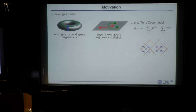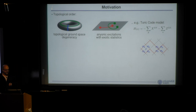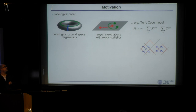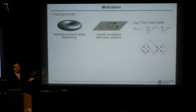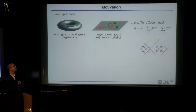I'll keep the motivation short and will not introduce tensor networks — I assume everyone here knows what they are. The talk will be about topologically ordered systems, which have a very unconventional type of order that cannot be detected by local order parameters. The central question is: how can we detect this order in experimental settings or numerical simulations if there are no simple local ways of probing these properties?